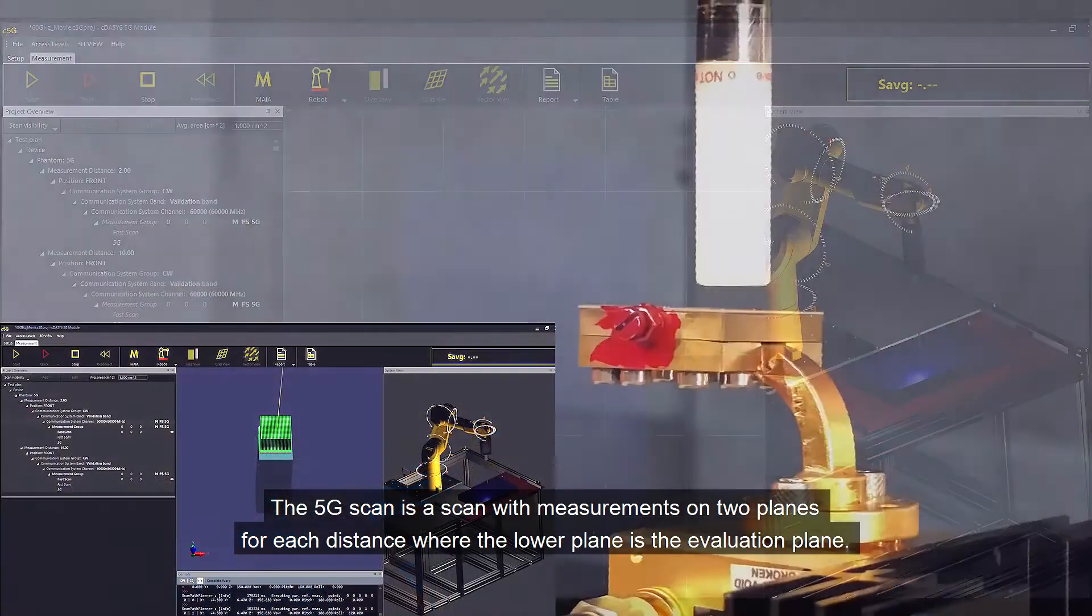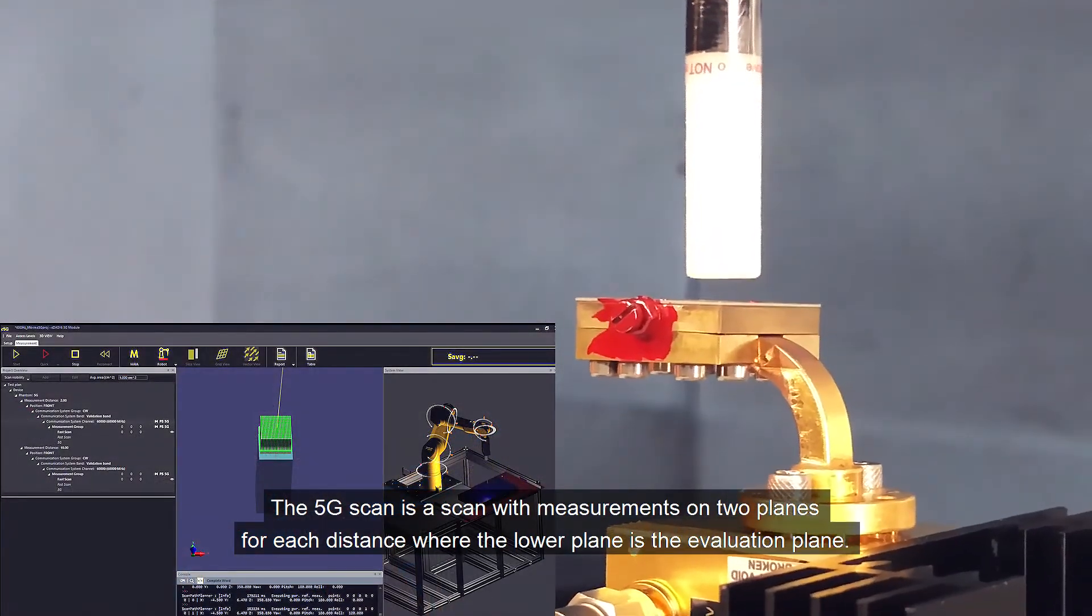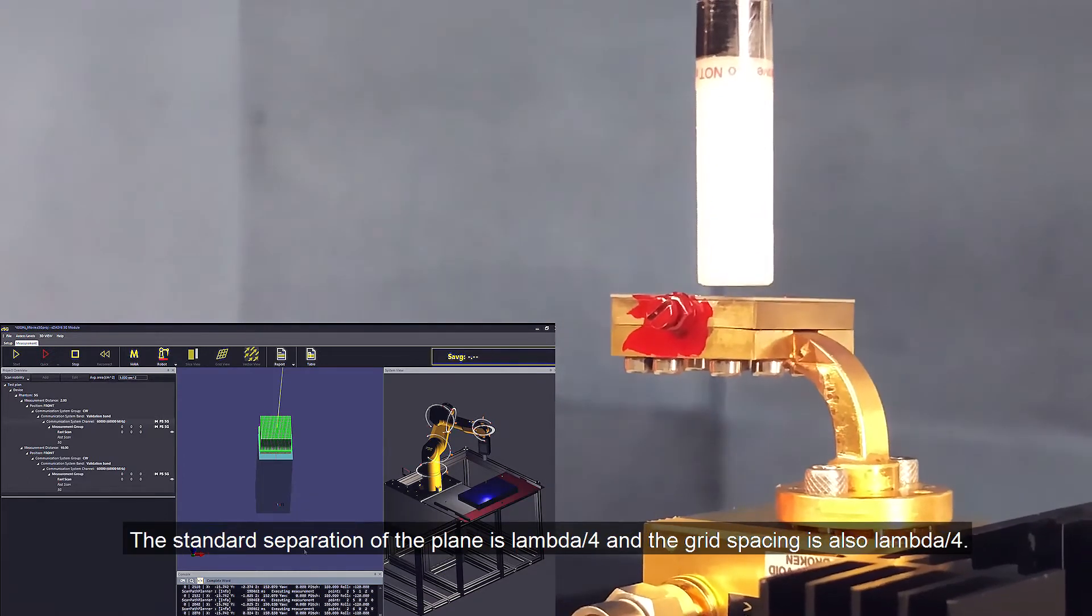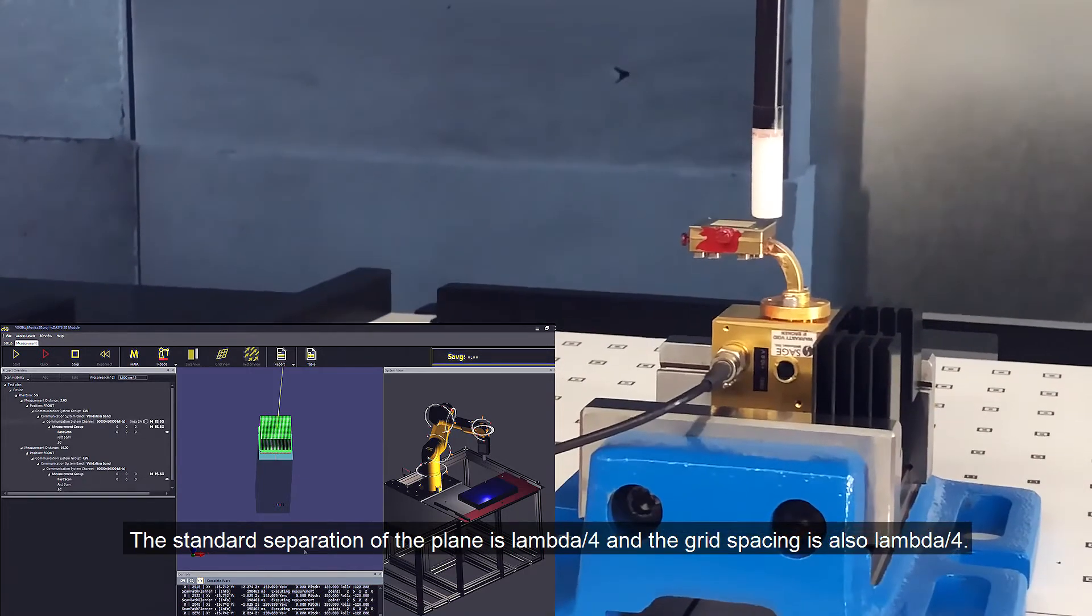The 5G scan is a scan with measurements on two planes for each distance, where the lower plane is the evaluation plane. The standard separation of the plane is lambda by 4 and the grid spacing is also lambda by 4.